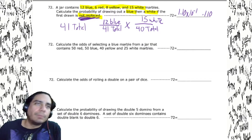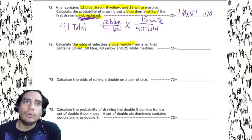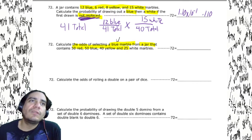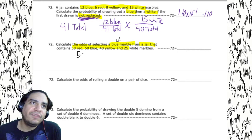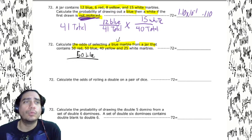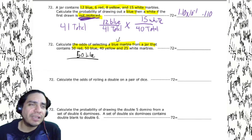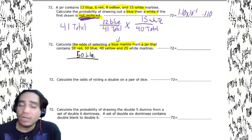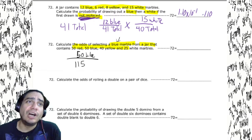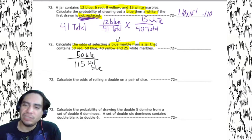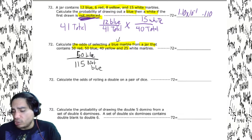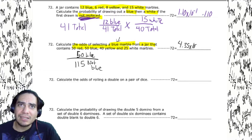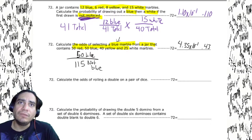Calculate the odds of selecting a blue from a jar with 50 red, 50 blue, 40 yellow, and 25 white. We're looking for blue — that's 50 blue. Since this is odds, the denominator is not the total. Total not-blue: 50 red plus 40 yellow plus 25 white equals 115. So 50 divided by 115 gives 4.35 times 10 to the negative first, or 0.435.